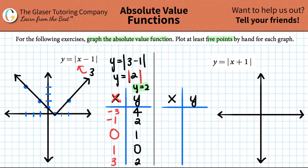Just know that is a telltale sign that you have an absolute value graph — whenever you see a V bouncing, that's an absolute value graph.